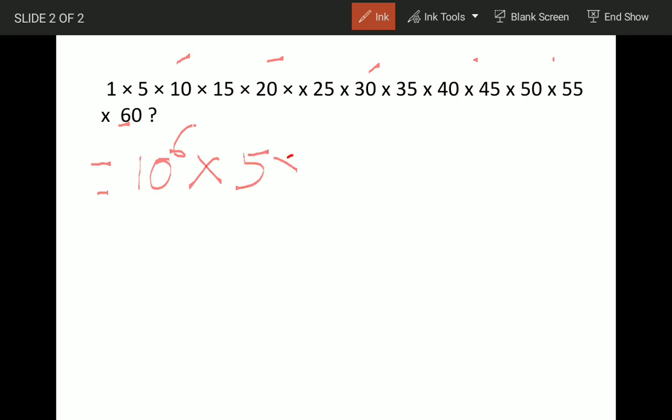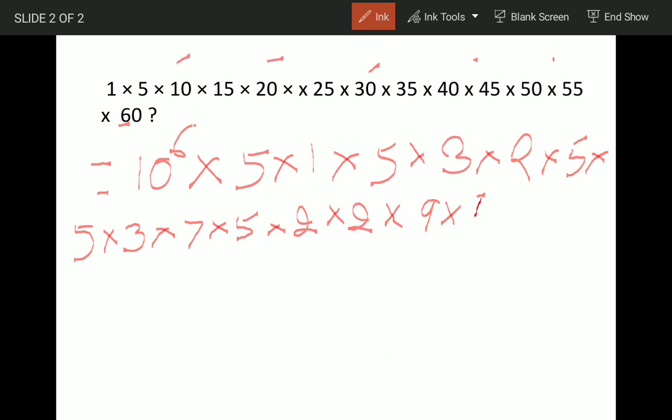So 5, 10 will become 1, 15 will be 5 × 3, 20 will become 2, 25 will be 5 × 5, 30 will become 3, 35 will be 7 × 5, 40 will be 2 × 2, 45 will be 9 × 5, 50 will become 5, 55 will become 11 × 5, and 60 will be 6, but we will write it as 3 × 2.